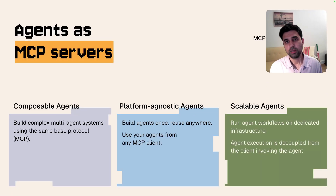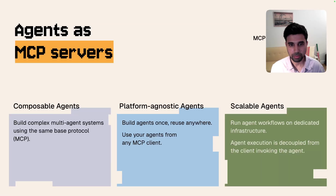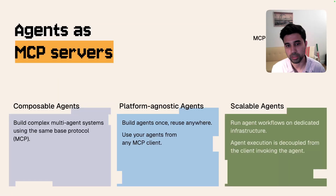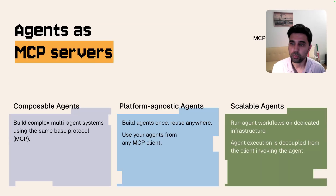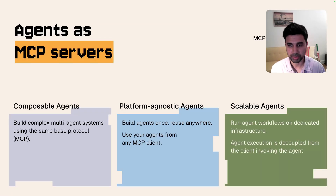What are the benefits of exposing agents as MCP servers? First, you get composable agents — complex multi-agent systems operating over the same base protocol that everybody's adopting. Second, you get platform-agnostic agents — you can build these agents once and reuse them anywhere that is MCP compatible. And finally, you get scalable agents: if you run agent workflows on dedicated infrastructure, you separate the agent compute from the client being used to invoke the agent, giving enormous benefits in scalability, performance, and durability.